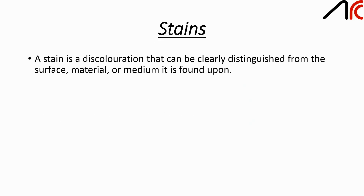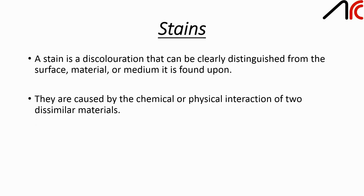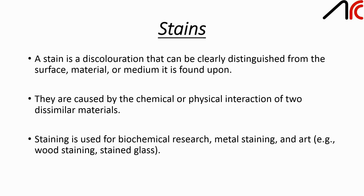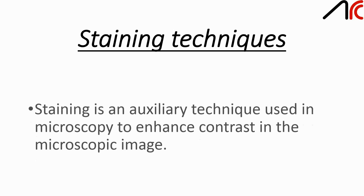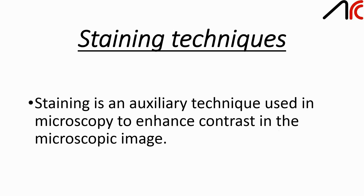What is a stain? A stain is a discoloration that can be clearly distinguished from the surface, material or medium it is found upon. They are caused by chemical and physical interaction of two dissimilar materials. Staining is used for biochemical research, metal staining and art — for example, wood staining and stained glass. Staining is a technique which is used in microscopy to enhance contrast in the microscopic image.